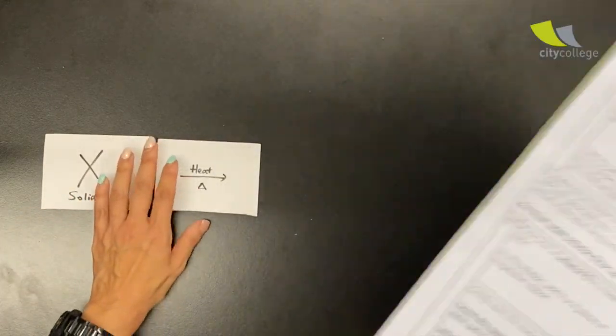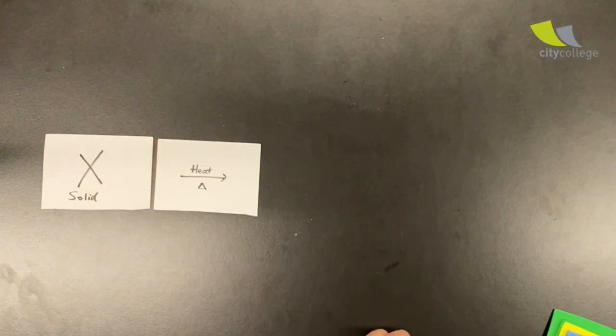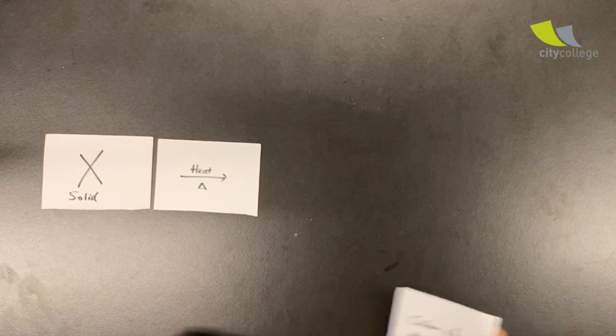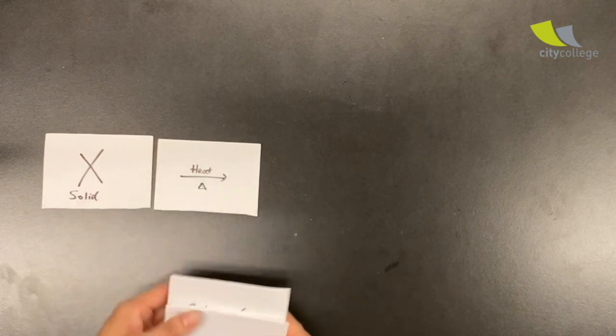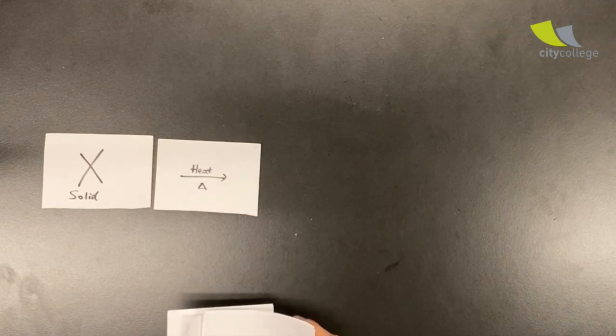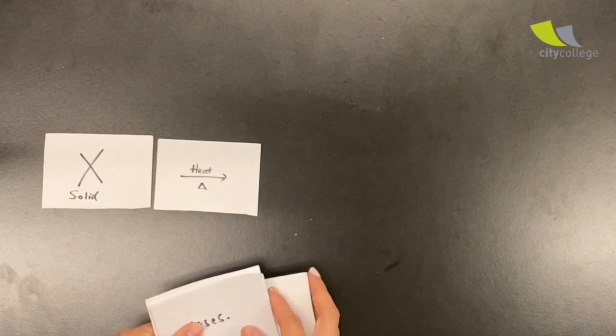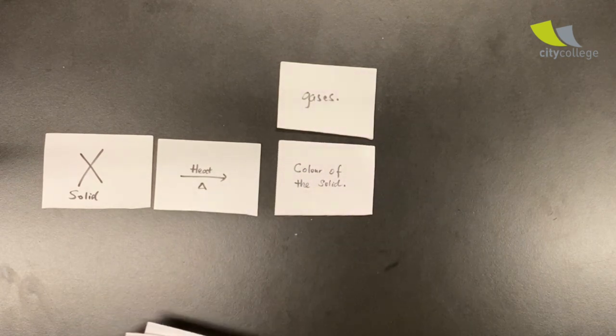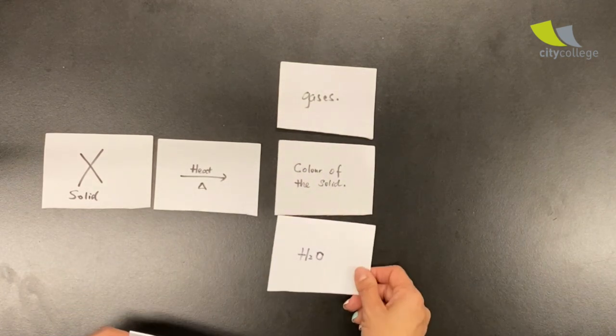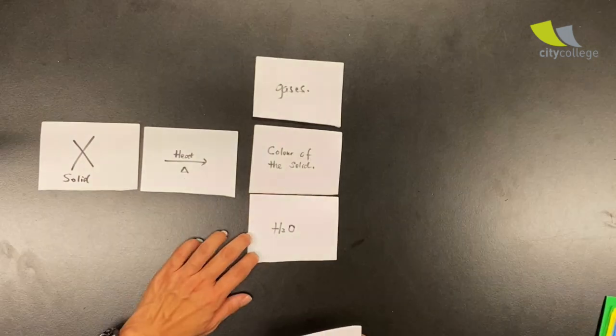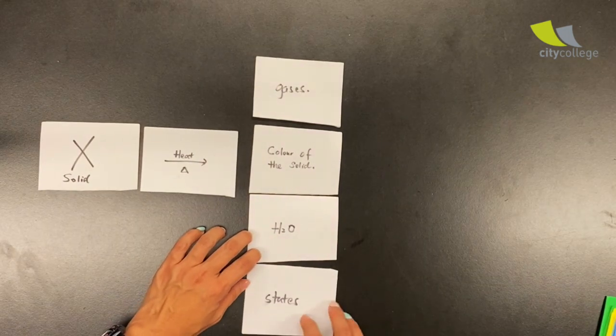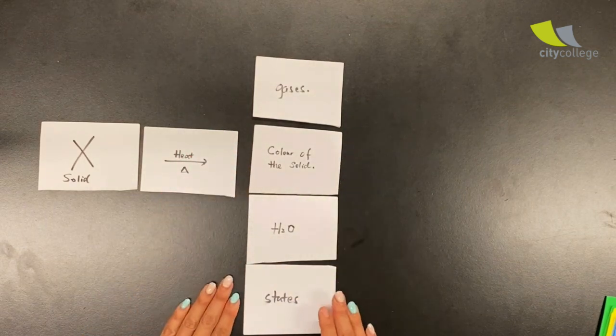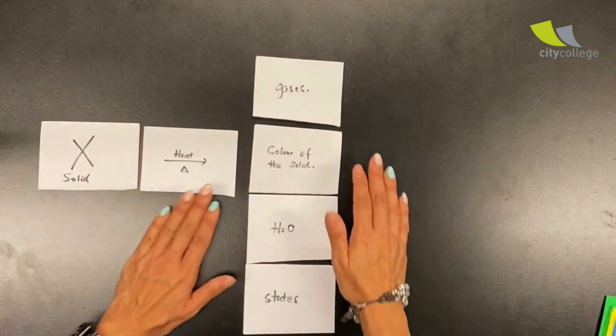So when you heat the solid alone, what are some of the things that you can look out for? Usually there will be gases that are evolved. There might be even a change in the color of the solid. There might even be water that is evolved as well, and there might even be a change in the states.